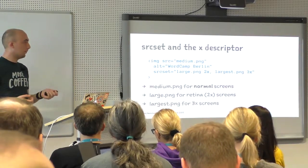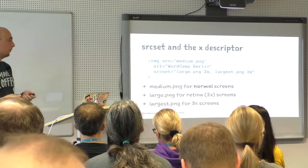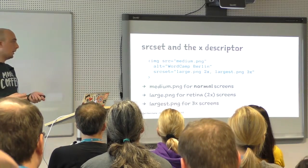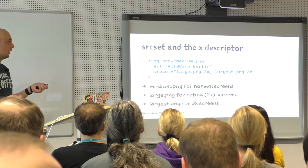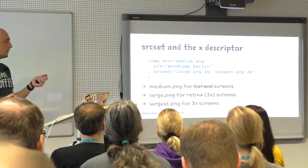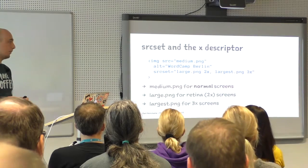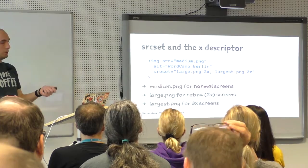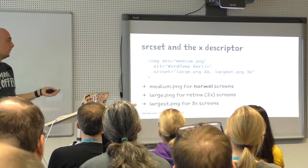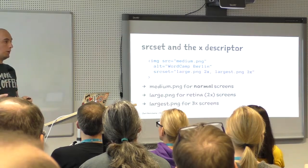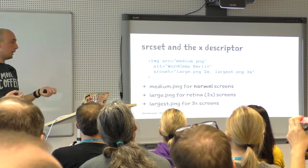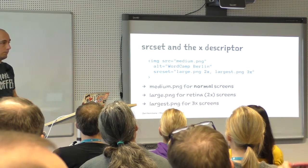Let's look at the new markup. First, the retina problem. We have our normal image tag with an alt attribute — you should always have one for accessibility — and then a srcset attribute with a list of images. Behind each filename, we use the x descriptor to indicate which display the image is for. So in the srcset, large.png is 2x and largest.png is 3x. On a normal screen the browser shows medium.png, on a retina screen large.png, and on a 3x screen largest.png.